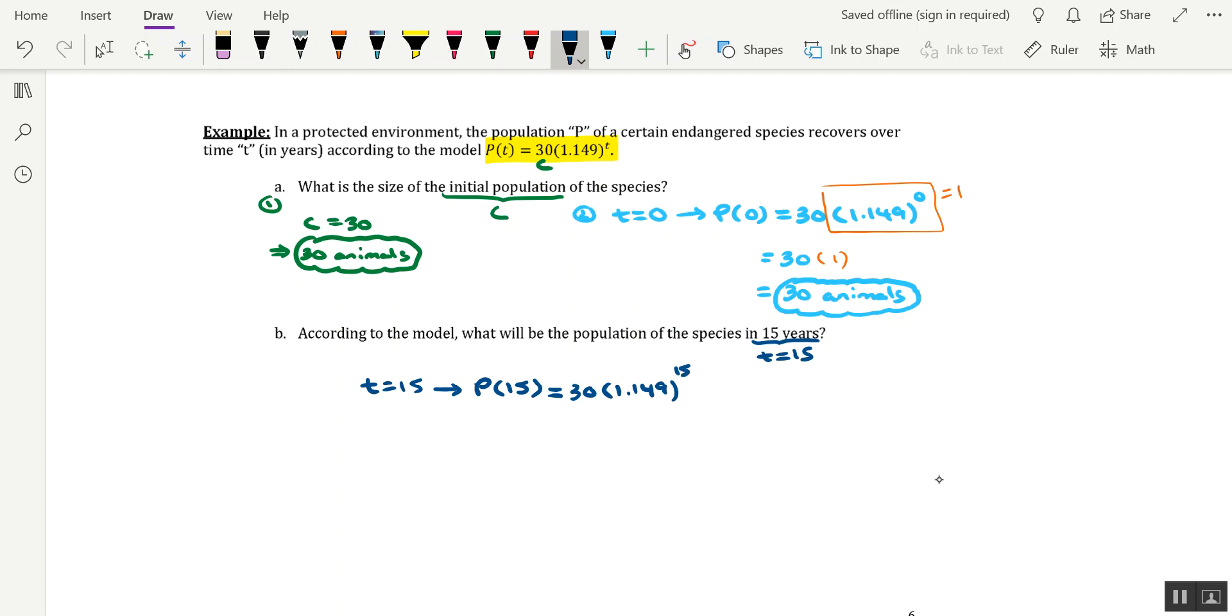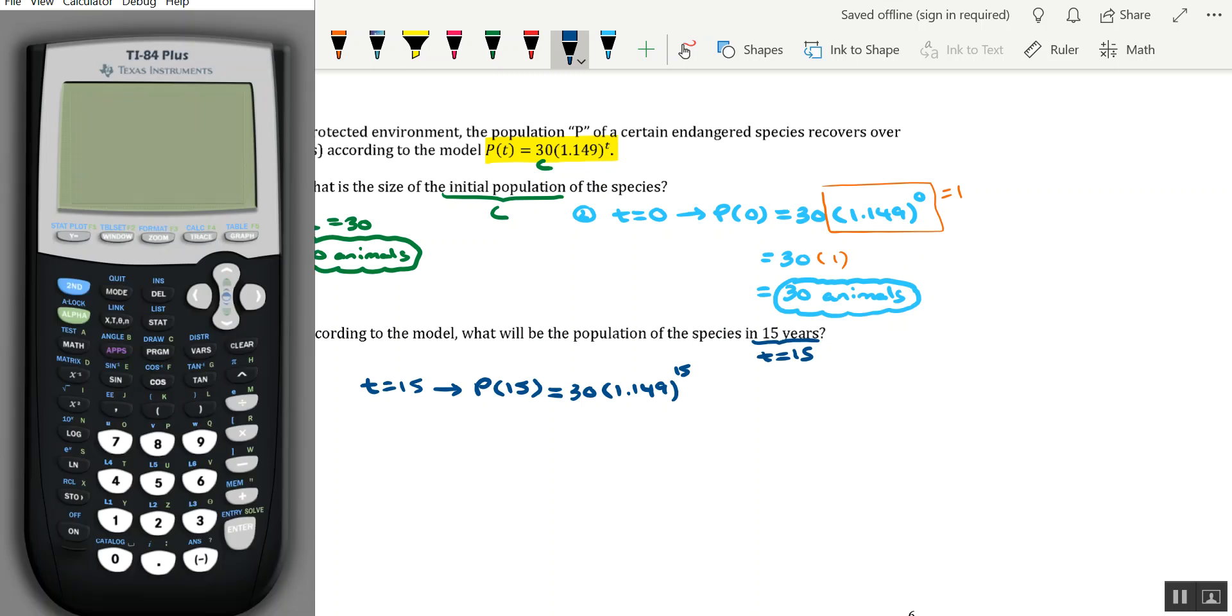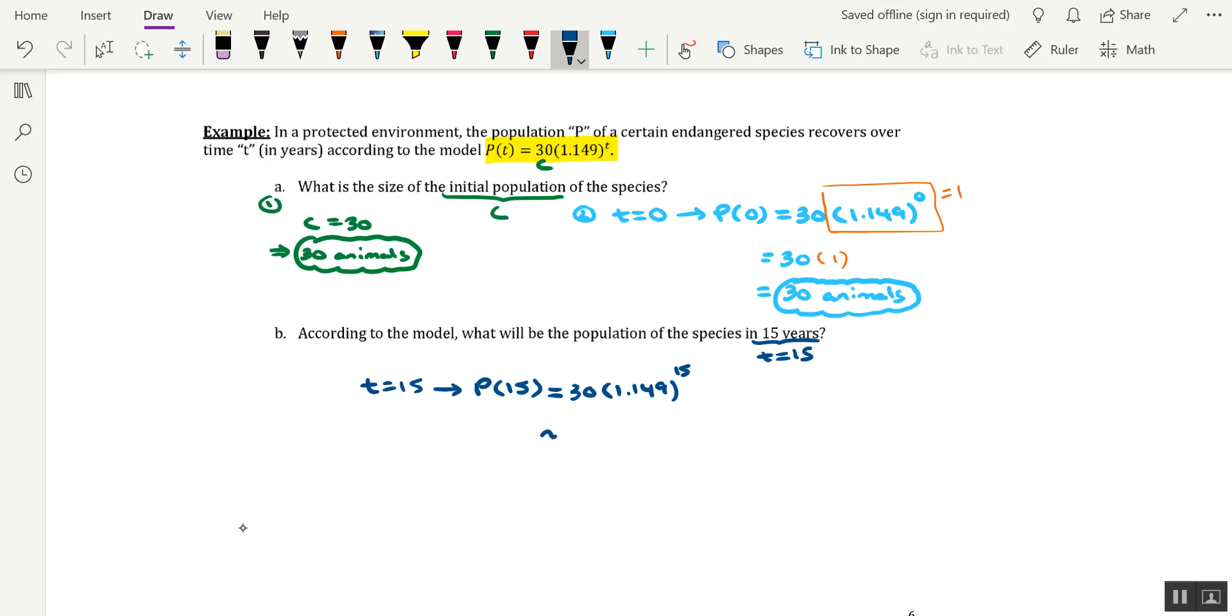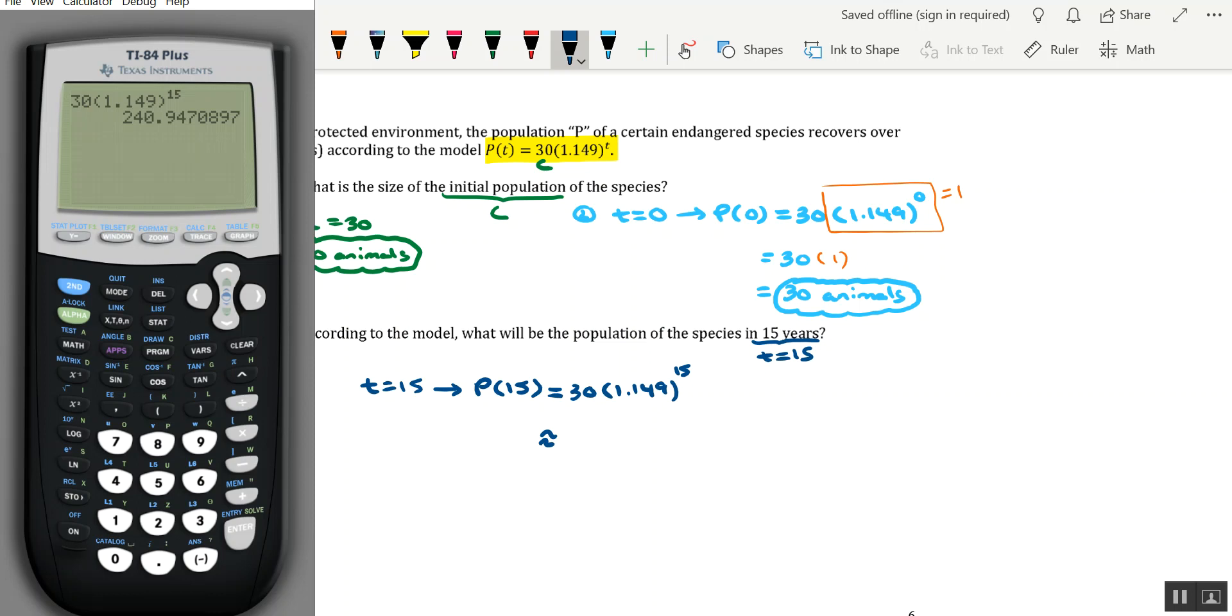Get out the graphing calculator. So type 30, parentheses, 1.149. Close off the parentheses, hit your caret key, type in 15, hit enter, and we'll round to the nearest animal. We'll say that that is approximately 241 animals.